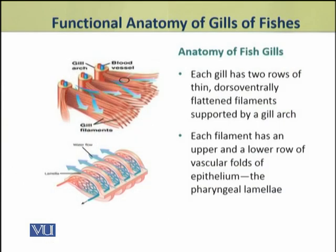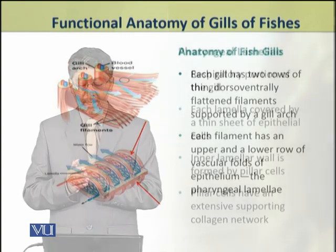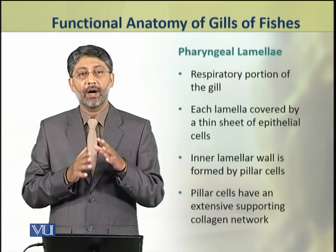Now we shall discuss the anatomy of fish gills. Each gill has two rows of dorsal-ventrally flattened filaments which are supported by one gill arch. Each gill has an upper and lower row of vascular folds of epithelium which we call pharyngeal lamellae. These pharyngeal lamellae form the respiratory portion of the gill.